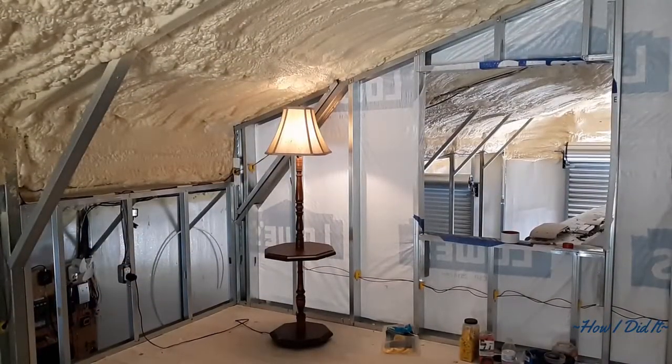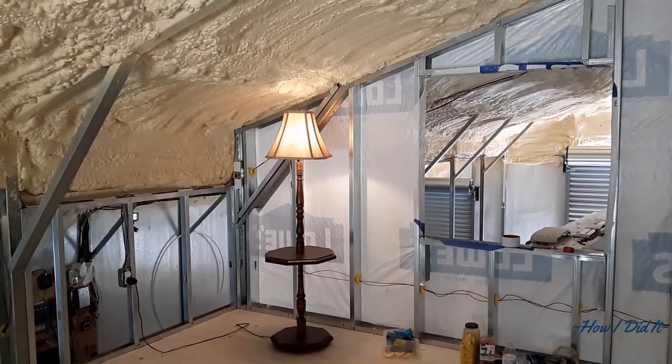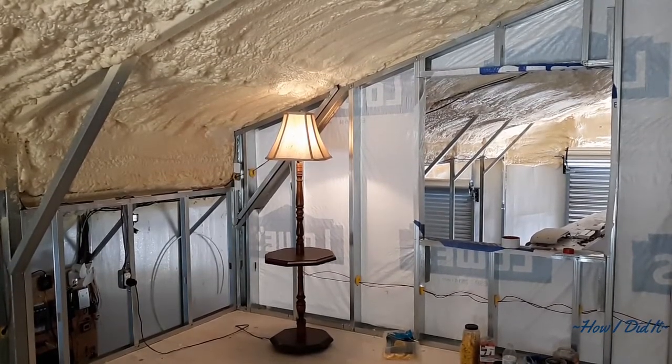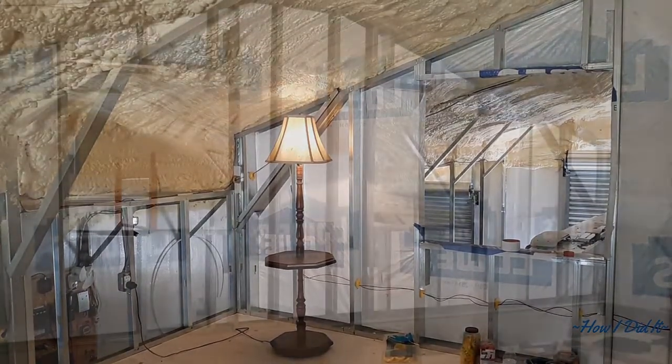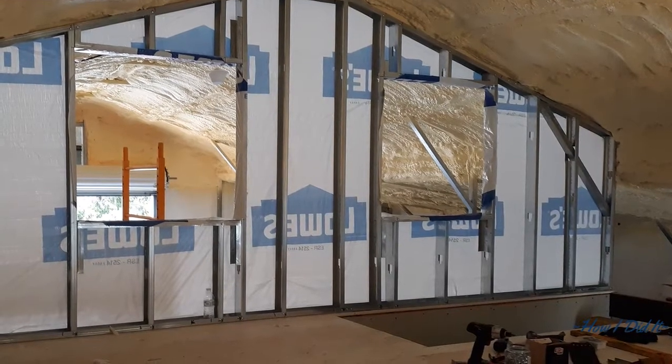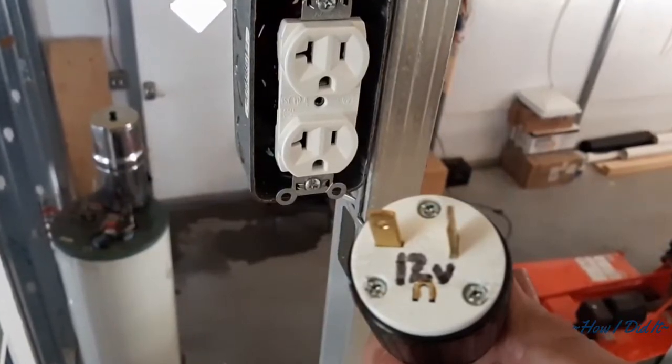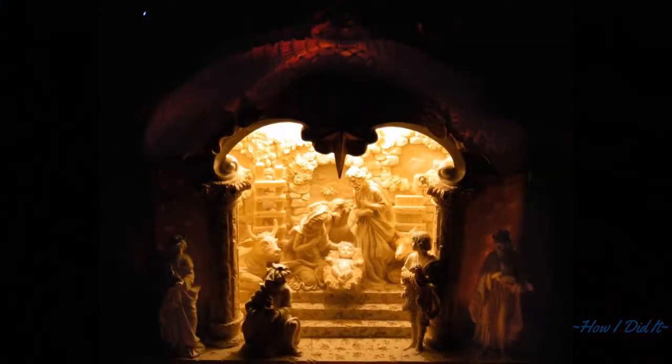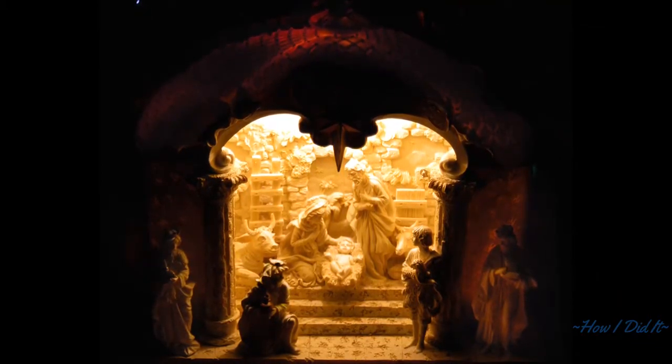All righty, then. That's it for this week's episode of How I Did It. We'll see you next week, or I should say next year, for a new episode of How I Did It, including continuing our framing on the loft area of the off-grid barn, and how I convert my 110 lights to 12-volt. All righty, then. Y'all have a safe and happy holiday season, and we'll see y'all in 2020. Have a blessed day.